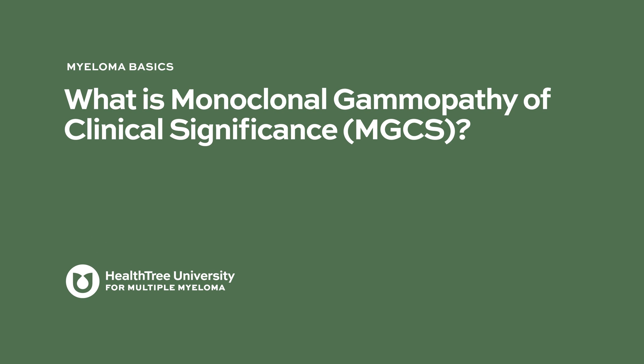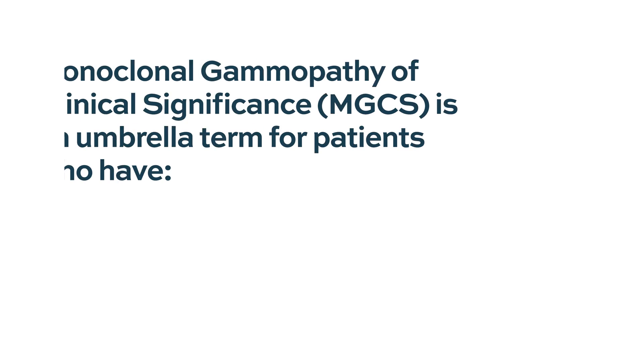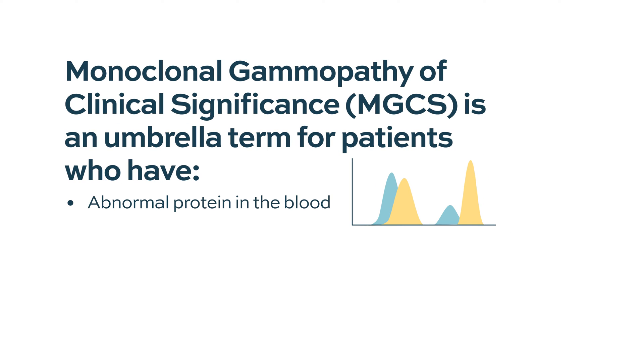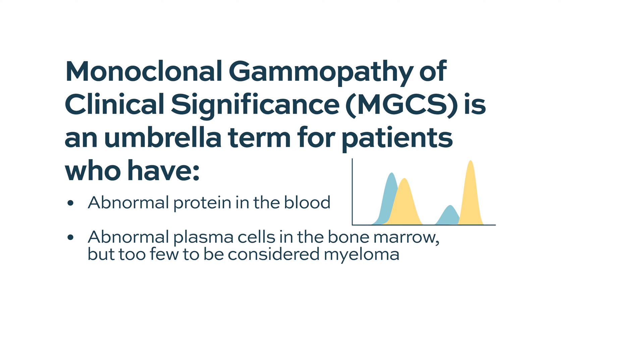Monoclonal gammopathy of clinical significance is a new umbrella term used when patients have an abnormal protein and abnormal plasma cells in the bone marrow that don't meet criteria for multiple myeloma, such as an M-spike greater than 3 or greater than 10% plasma cells in the bone marrow.